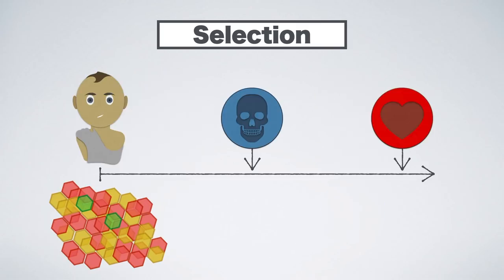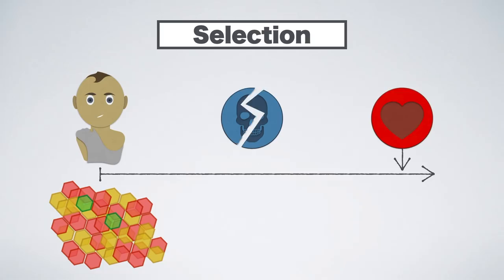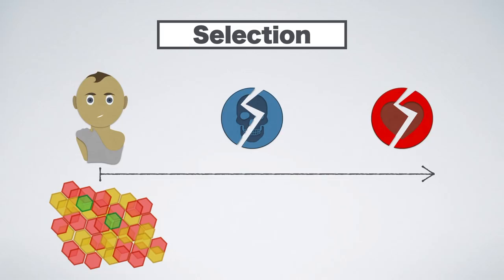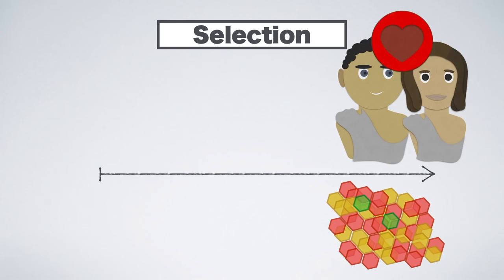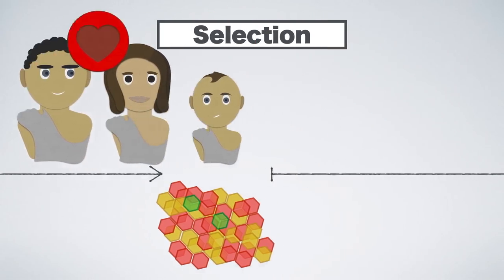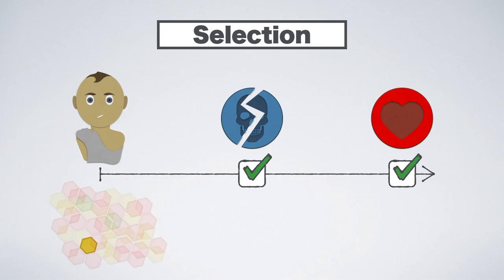If you die before you can mate, your specific gene mutations are removed from the gene pool. If you manage to stay alive but can't attract a mating partner, they are also removed from the gene pool. Only if you manage to survive long enough and attract a mating partner do your genes — or more precisely a copy of them — make it to the next round. These are the boxes your body has to tick, and since each gene describes a small part of you, each gene contributes a small part towards ticking those boxes.